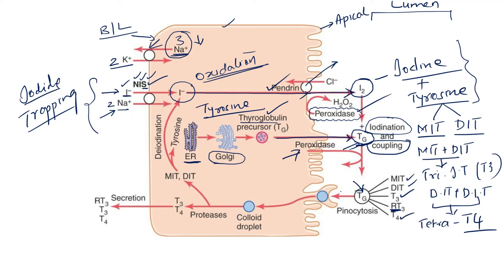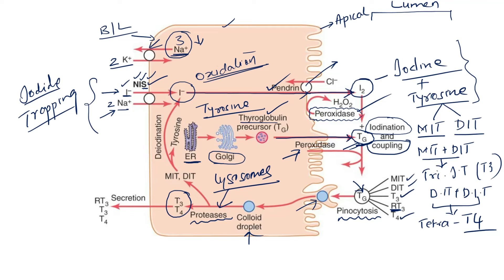When the body requires T3 and T4 to be secreted, the colloid — thyroglobulin along with all associated hormones — undergoes pinocytosis at the apical membrane, forming a colloid droplet. This colloid droplet fuses with lysosomes inside the cell. The lysosomes secrete enzymes such as proteases, which cleave T3 and T4 from the thyroglobulin. These T3 and T4 are then transported across the basolateral membrane into the circulation, along with small amounts of reverse T3.